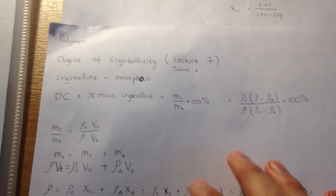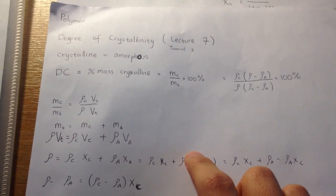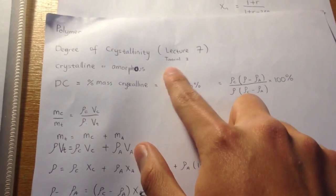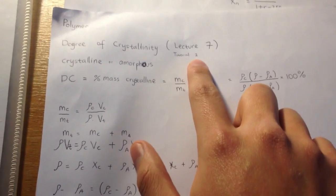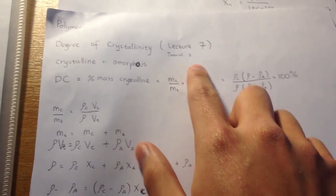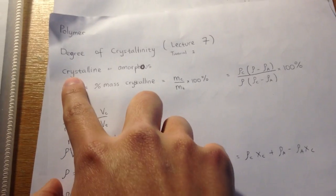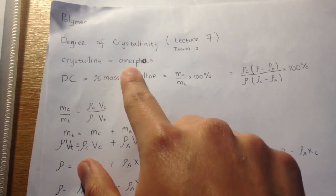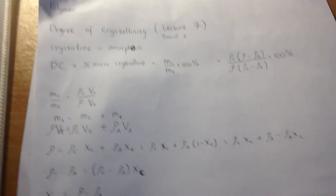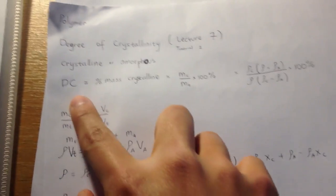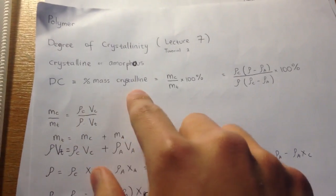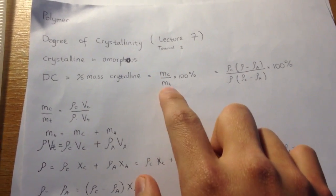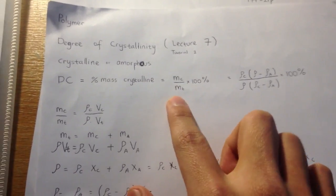Next is about degree of crystallinity, that's on lecture 7. Actually this discusses more for tutorial 2, question 1. So polymer consists of crystalline and amorphous parts. The degree of crystallinity is the mass percentage of crystalline, so it's mc over mt, crystalline over total, times 100%.